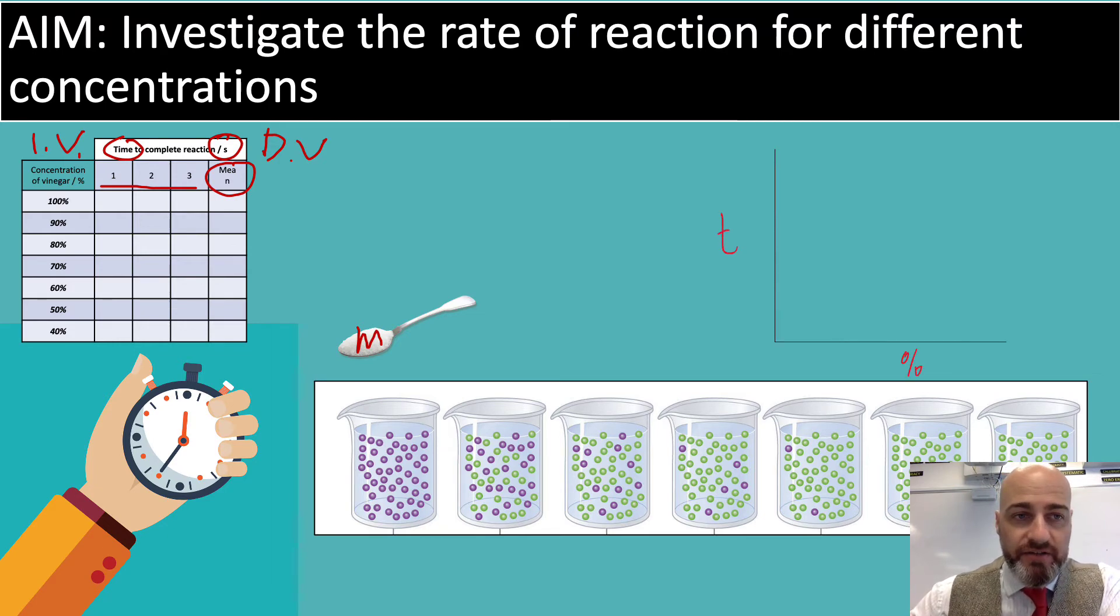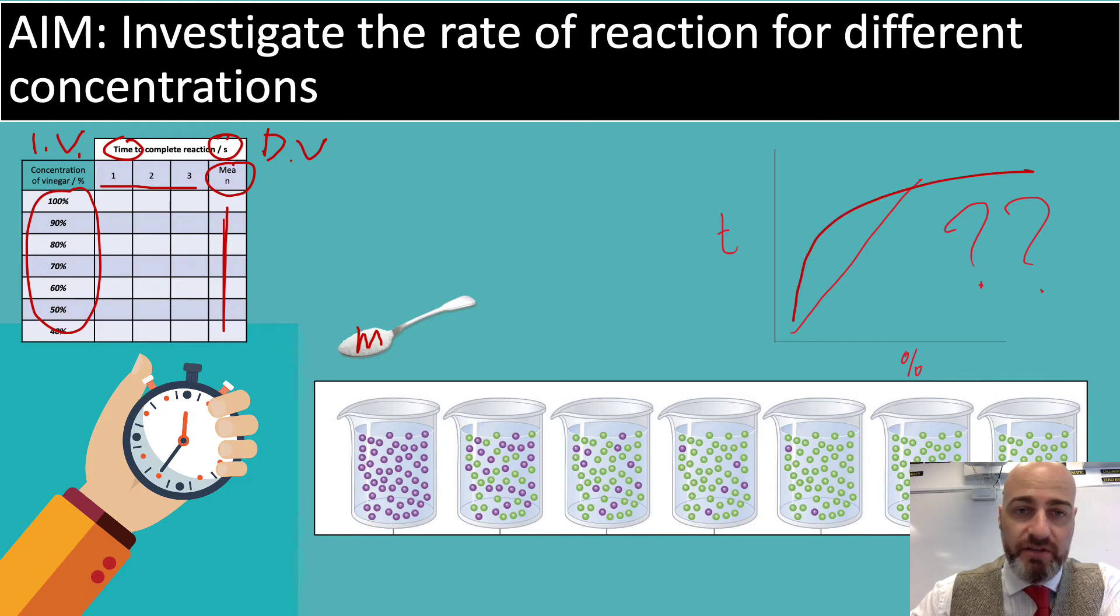At the end of this, you will plot a graph with your mean data from here versus your concentration so that you will be able to establish the relationship. Maybe it's a straight line, maybe it's a curve that goes like this, maybe it's a curve that goes like that. Who knows? So it's up to you to investigate it.